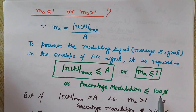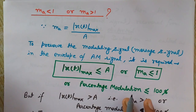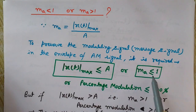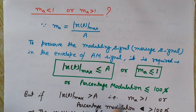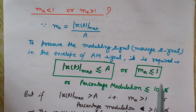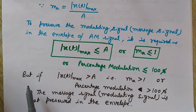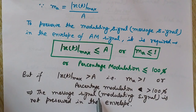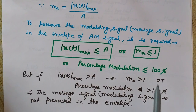Ma should be less than or equal to 1, or equivalently, percentage modulation should be less than or equal to 100%. To preserve the modulating signal, this condition must be followed. If xt_max is more than A — that is, ma is greater than 1 or percentage modulation is greater than 100% — then the modulating signal is not preserved in the envelope.